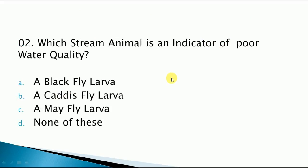Which stream animal is an indicator of poor water quality? The correct answer is black fly larva — option number A is the correct answer for this question. These are all questions from your books which are recently available in the market. If you can't buy the books, you don't need to worry — the questions will all be covered. If you liked it, share the video.